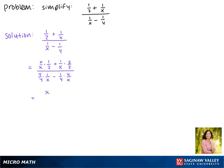So in the numerator we get x over 2x plus 2 over 2x over y over xy minus x over xy.